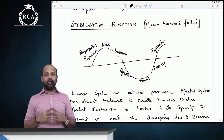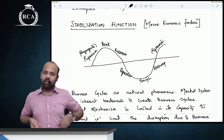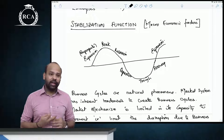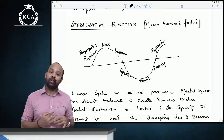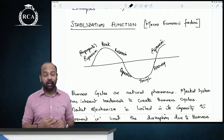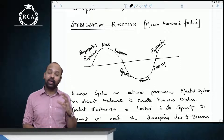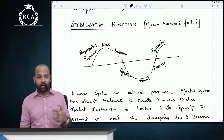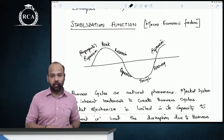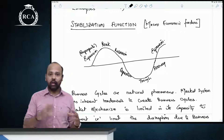Finally, the third fiscal function is the stabilization function. Business cycles are a natural phenomenon — whatever market mechanism is in place will lead to business cycles. The market does not have the right kind of mechanism to prevent or reduce the impact of these business cycles. This is why government intervention is required; as per Keynesian theory, counter-cyclical government intervention is a must.